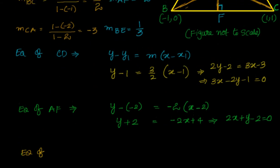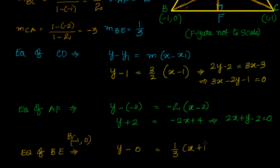Now let's find the equation of BE. Point B has coordinates (-1, 0). Using point-slope form: y minus 0 equals (1/3) times (x minus (-1)), which is x plus 1. So 3y equals x plus 1, or x minus 3y plus 1 equals 0. That is the equation of BE.